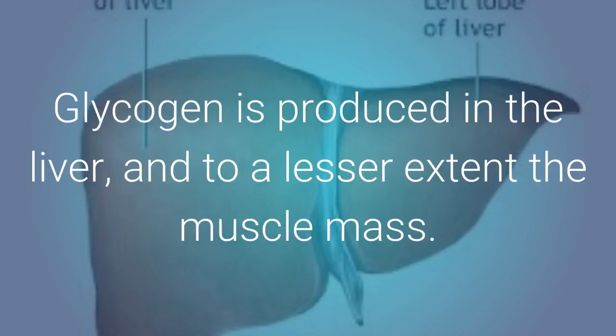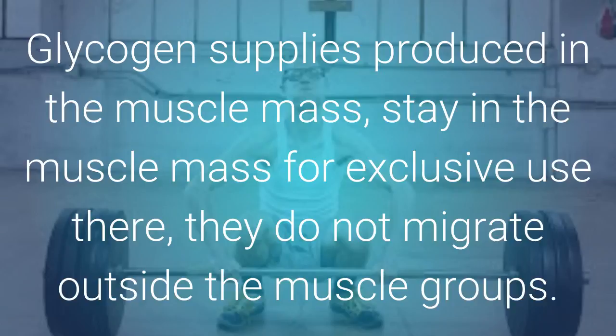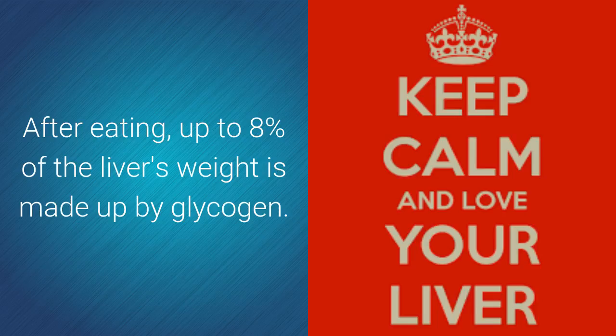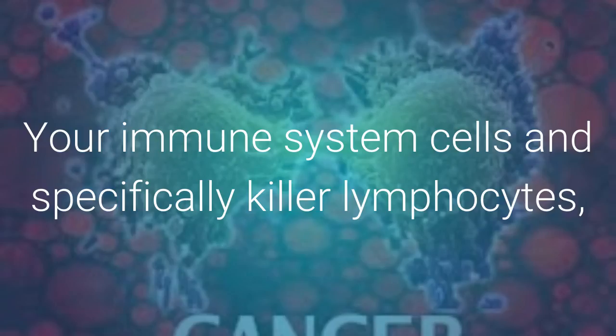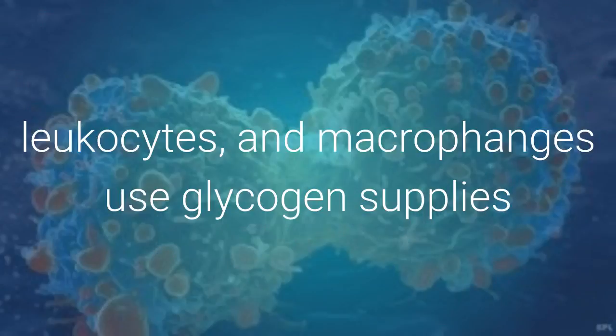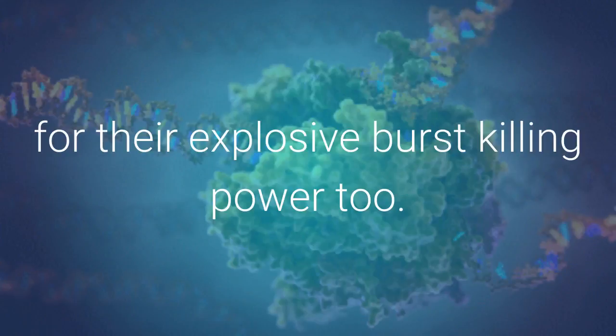Glycogen is produced in the liver and to a lesser extent the muscle mass. Glycogen supplies produced in the muscle mass stay in the muscle mass for exclusive use there — they do not migrate outside the muscle groups. After eating, up to 8% of the liver's weight is made up by glycogen. These glycogen supplies are distributed over the body for the next 12 hours. Your immune system cells, specifically killer lymphocytes, leukocytes and macrophages, use glycogen supplies for their explosive burst killing power too.